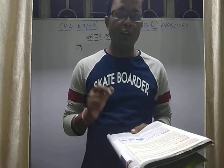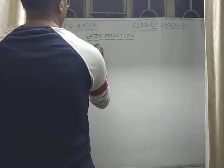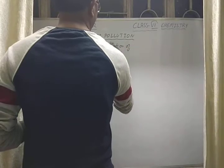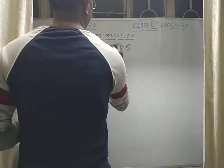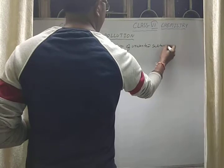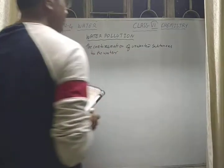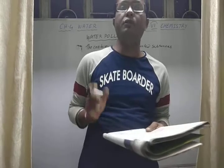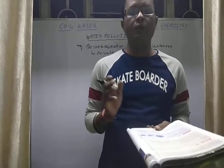Water Pollution means the contamination of water by unwanted substances. Unwanted means the things which are not good for us, that are harmful to us. Things that cause harm and affect both living and non-living things — that is called water pollution.